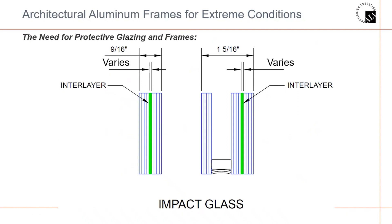The three components of the test that need to be specified and used in the field are the specific frame, one of the tested interlayers, and one of the tested silicones or dry gaskets. Those three must be worked out — they're a system. They were tested together, so they must all be specified and provided together. These components make up the tested system.